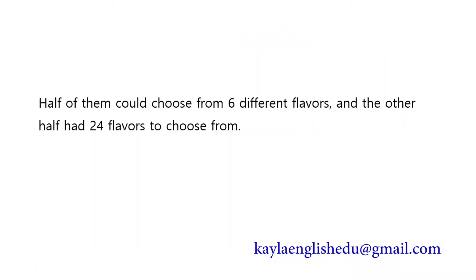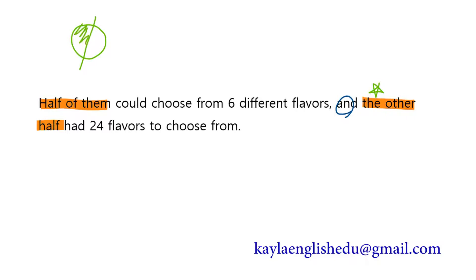Half of them could choose from six different flavors and the other half had twenty-four flavors to choose from. 제일 먼저 'half of them'과 'the other half' — 어떤 단어가 중요해서 이야기하는 걸까요? 'the other' 부분 때문인데요. 전체를 두 개로 나눠서 처음 부분을 half of them이라고 받았어요.